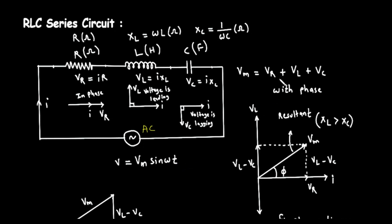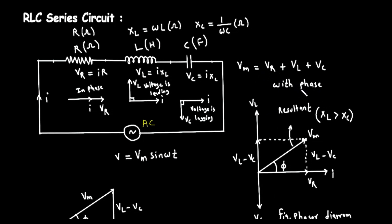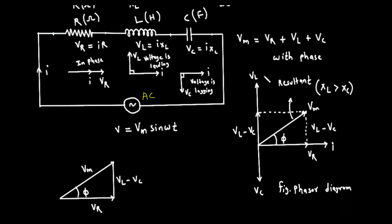Part 2, The Phasor Diagram Adding Voltages with Phase. So, how do we find the total voltage in the circuit? We can't just add V sub R, V sub L, and V sub C together like simple numbers, because they are not in phase with each other. This is where the phasor diagram, shown on the right, becomes essential. A phasor is simply an arrow, or vector, where its length represents the magnitude of a value, like peak voltage, and its direction represents its phase angle.